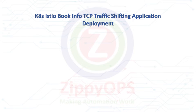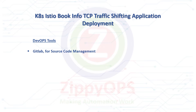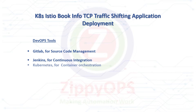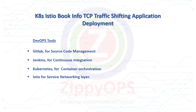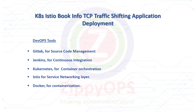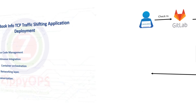The complete process is orchestrated through the Jenkins pipeline. The tools used in this demo are: GitLab for source code management, Jenkins for continuous integration, Kubernetes for container orchestration, Istio for the service networking layer, and Docker for containerization.